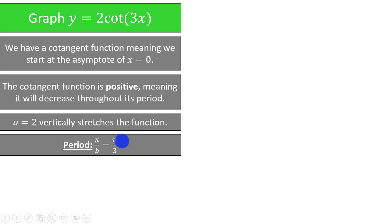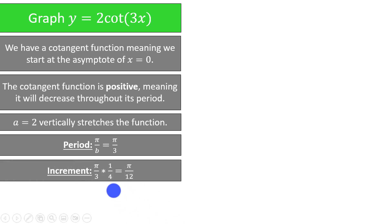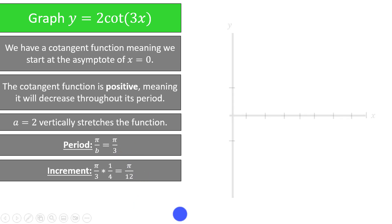That means this function will repeat itself every pi over 3 radians. The increment occurs at quarters of the period: pi over 3 multiplied by 1 over 4 is equal to pi over 12. We will have either an important point on the graph or an asymptote at every pi over 12 radians. Let's graph the function.